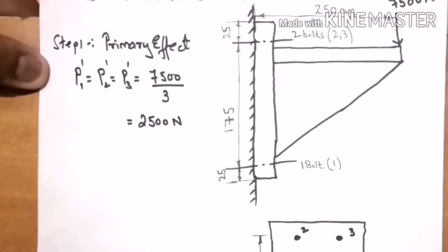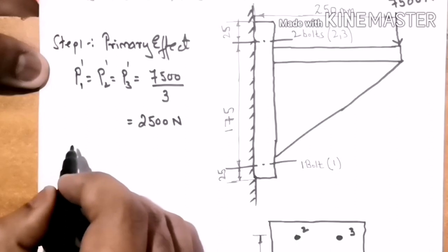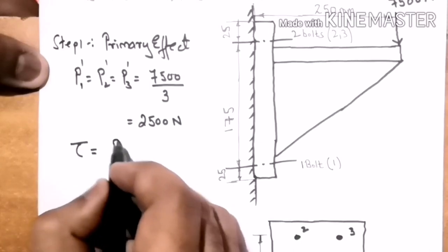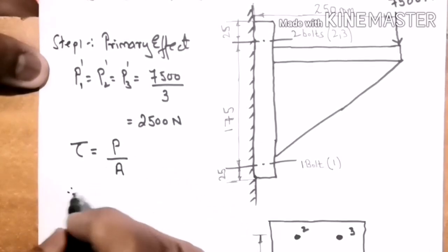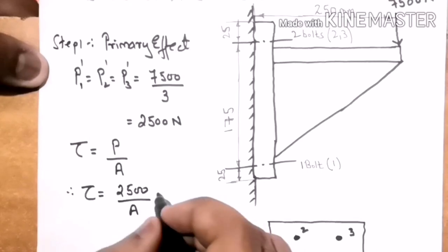In previous cases we kept the load as-is because both primary and secondary effects were shear, or both were tensile. But in this case one effect is shear and the other is tensile. Hence we will convert this load in terms of stresses. Since the primary effect is shear, we convert it to shear stress: τ = P / A = 2500 / A. Let this be equation 1.